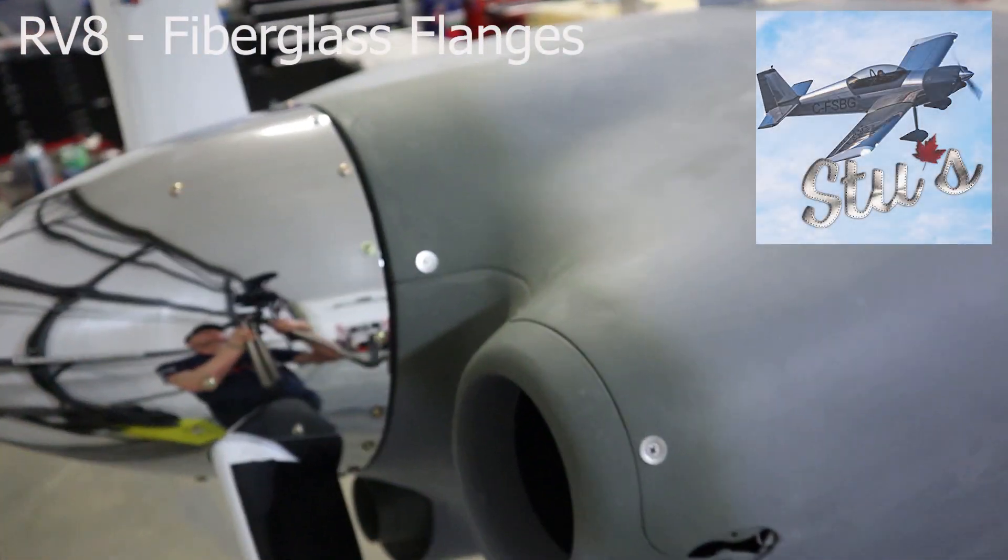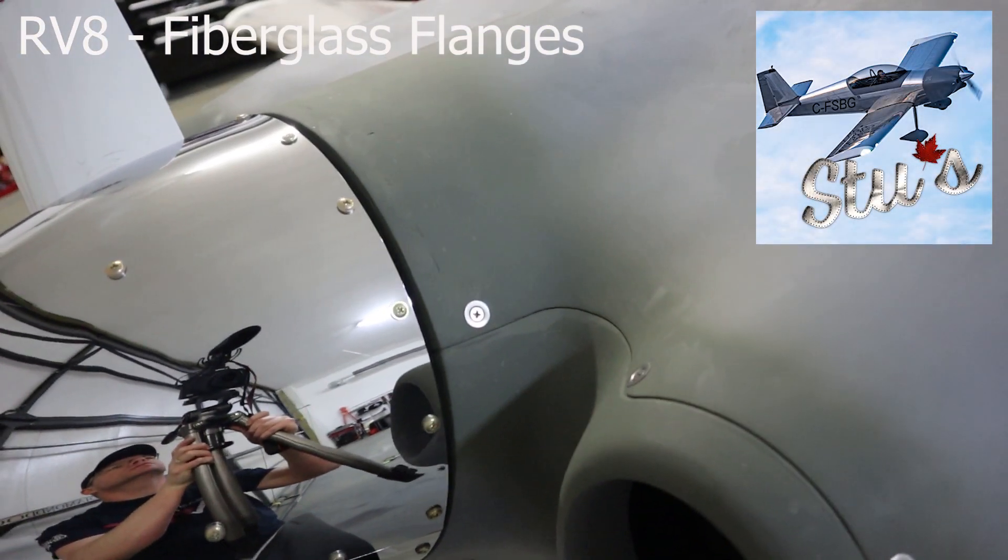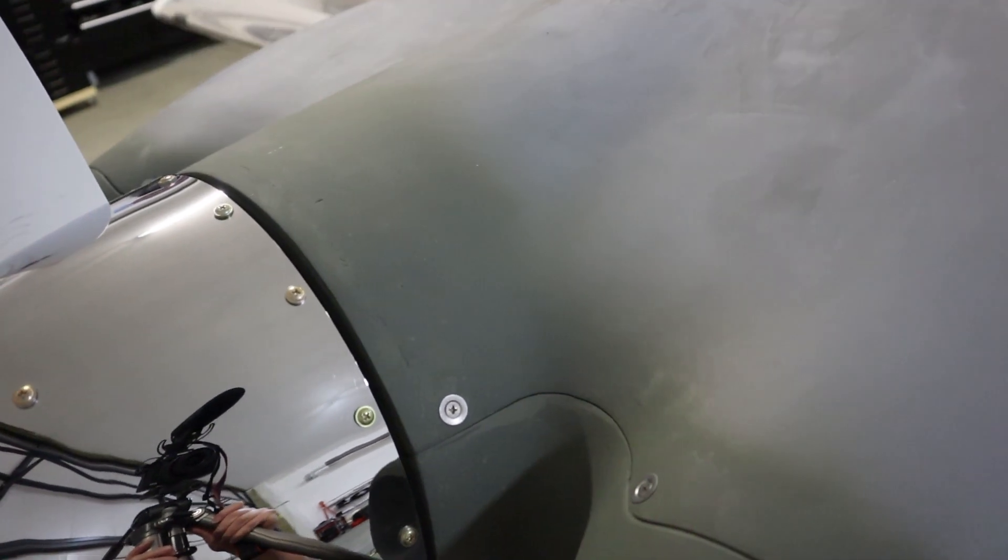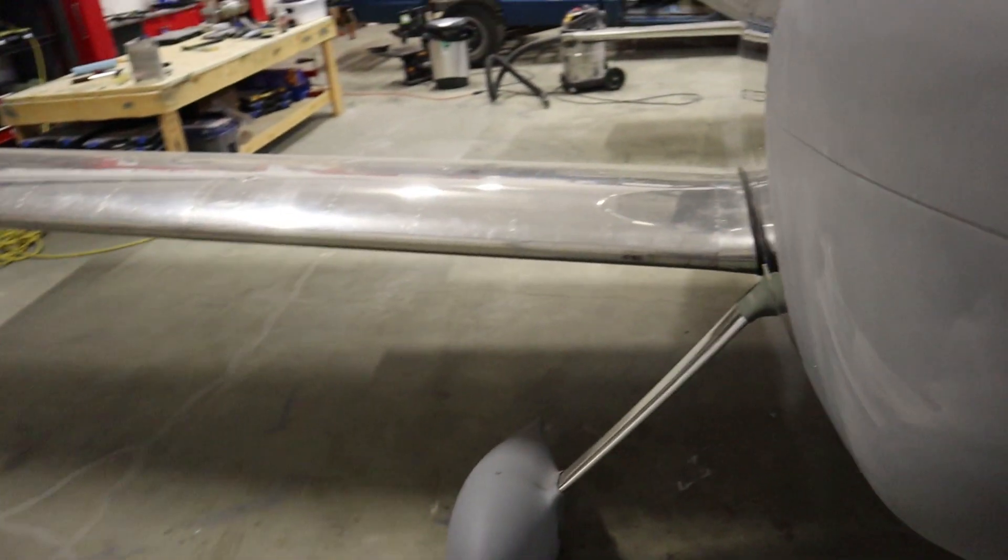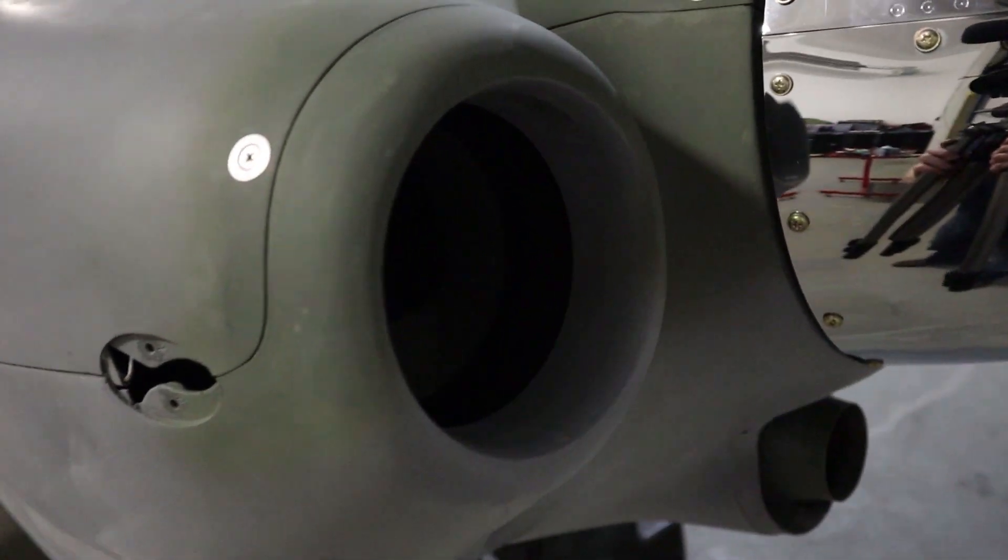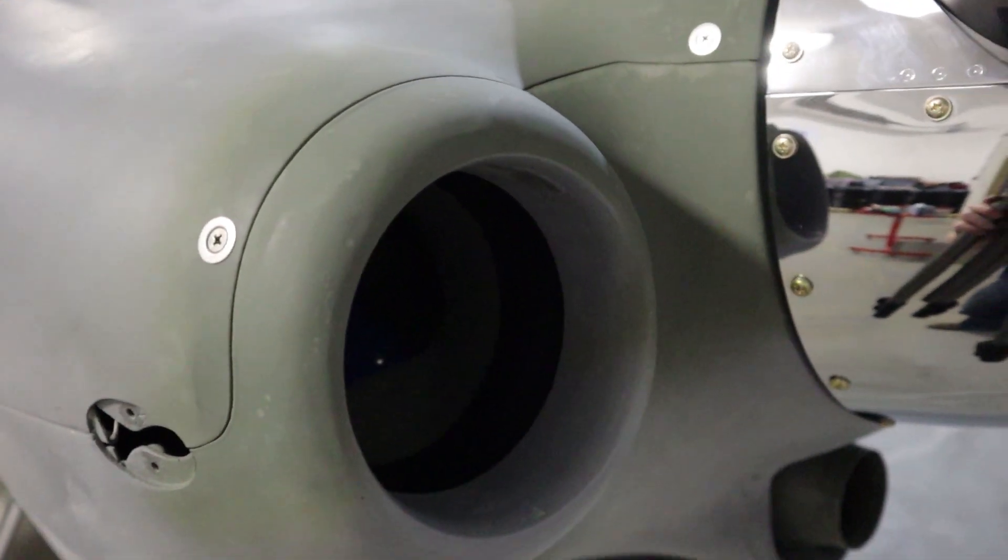Welcome back. I want to make another short video for you guys about how to make fiberglass flanges since it's one of the most common questions I've got. Here you see the cowling that has the fiberglass flange on the back there from previous videos, but I'm going to use the empennage fairing to show you how to do it.